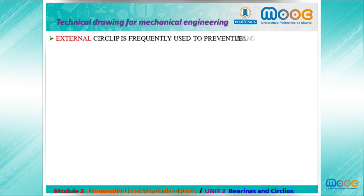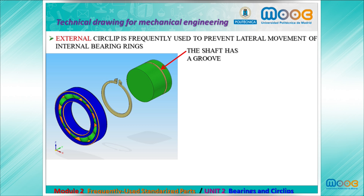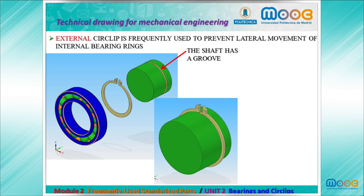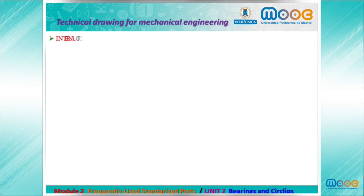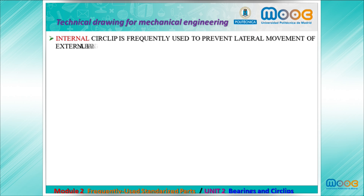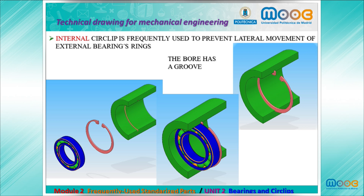An external circlip is frequently used to prevent lateral movement of internal bearing rings. The shaft must have a groove for the bearing, and the external circlip fixes the lateral movement of the internal bearing ring. An internal circlip is frequently used to prevent lateral movement of external bearing rings. The bore has a groove and the circlip fixes the position of the external bearing ring.